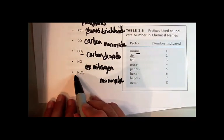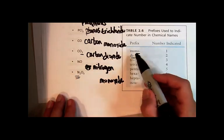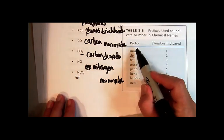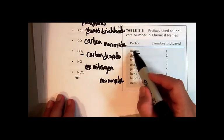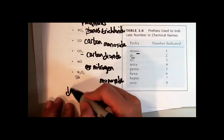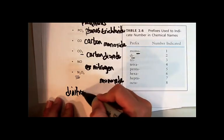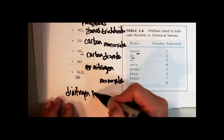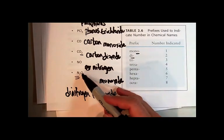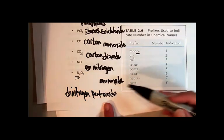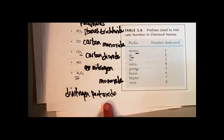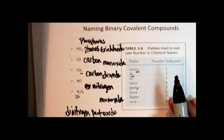And this last one, what's the name here? Okay, this time I have two of the first, so it's going to be di. The only time you leave off the prefix on the first one is if it's one. All the other times you have to use the prefix. So it's dinitrogen, pent, and again, since the element starts with a vowel, I don't say pentaoxide. I say pentoxide. I leave off the a if it's going to be a vowel.